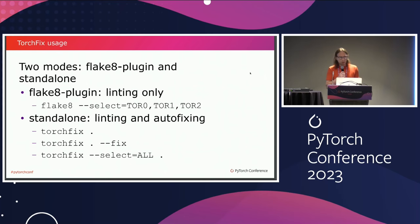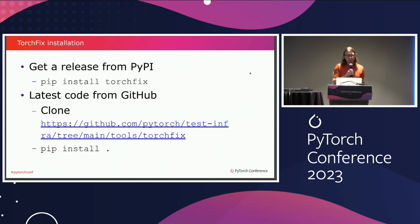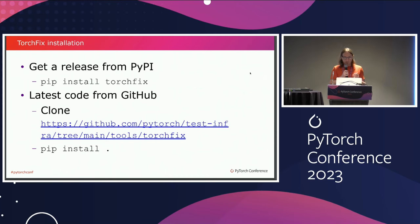Getting TorchFix is easy. To get the latest release from PyPI, you just run pip install torchfix. And if you want the latest code from GitHub, you just download or clone the GitHub repo and do pip install from there.